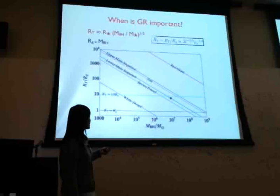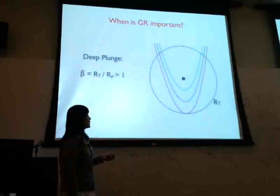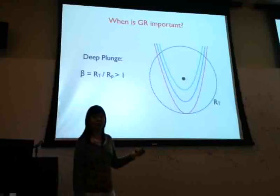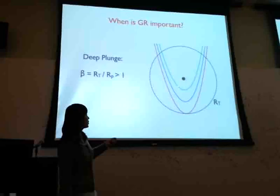You might wonder whether GR is important for main sequence stars around a medium solar-mass supermassive black hole. In certain cases it can also be very important, like if the star has a deep plunge — meaning the pericenter distance is much smaller than the tidal disruption radius. Even if the star is disrupted in a place where GR is not important, the tidal stream still passes through the region where strong gravity influences its properties and dynamics.